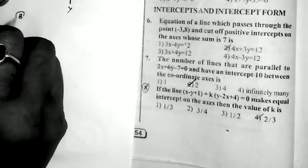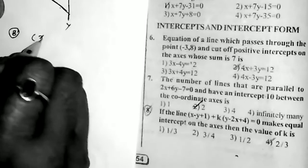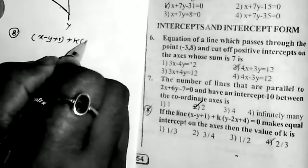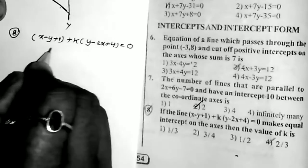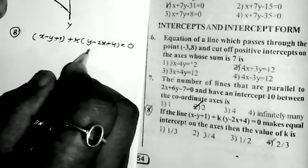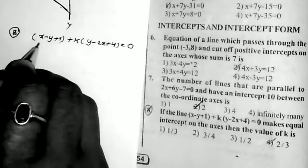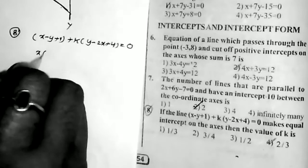Sum number 8: if the line (x − y + 1) + k(y − 2x + 4) = 0 makes equal intercepts on the axes, then what is the value of k? The given equation is (x − y + 1) + k(y − 2x + 4) = 0. Expanding and converting to the form ax + by + c = 0.